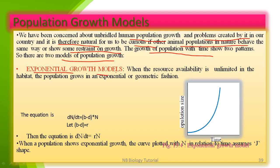First we see the exponential growth model. When the resource availability is unlimited — this word is very important — when the resource availability is unlimited in the habitat, the population grows in an exponential or geometric fashion. The equation is: dn/dt = (b - d) × N. If (b - d) = r, then the equation becomes dn/dt = rN.